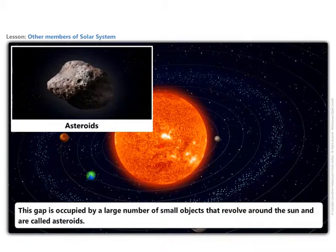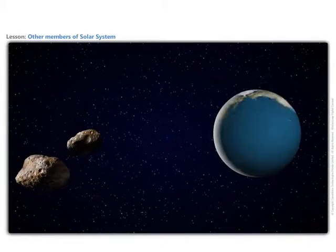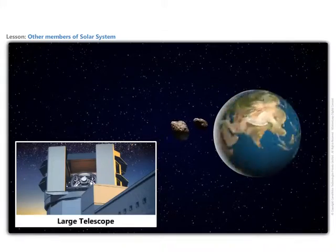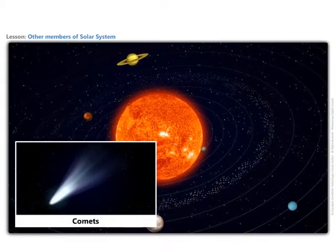These are called asteroids. Asteroids can only be seen through large telescopes. Comets are also members of our solar system.